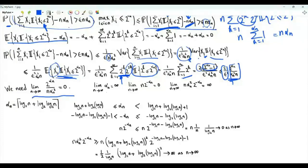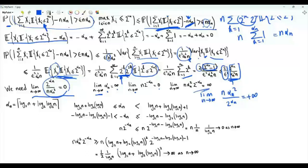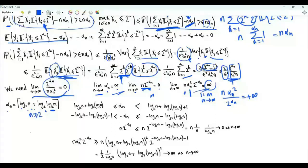Let's collect what we have regarding the sequence alpha_n. Alpha_n is positive integer valued, alpha_n tends to infinity as n tends to infinity, n times 2 to the minus alpha_n tends to 0, and equivalently n alpha_n squared over 2 to the alpha_n tends to infinity. A possible sequence satisfying these conditions is alpha_n equal to the ceiling of log n to the base 2 plus log to the base 2 of log n to the base 2, for n greater than or equal to 2. This is an integer valued sequence.